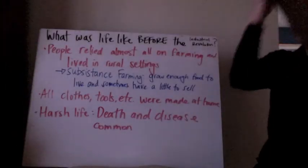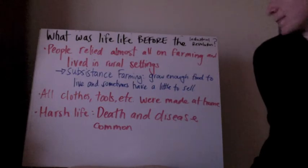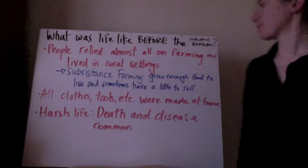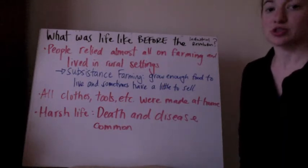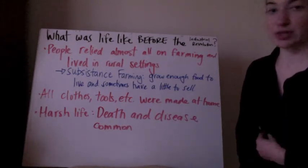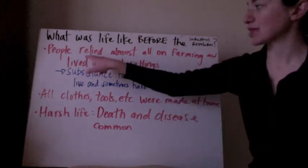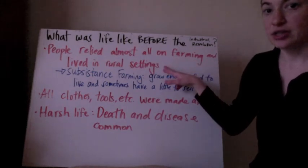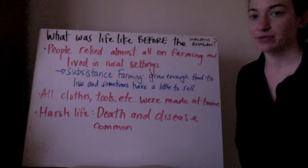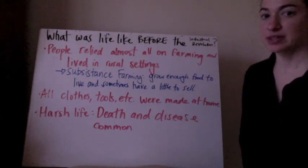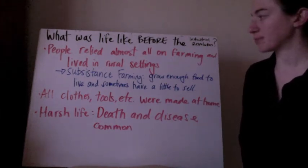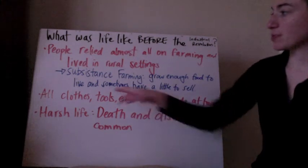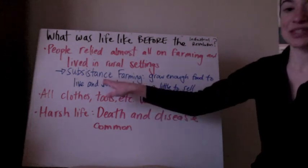The next board answers the question: what was life like before the Industrial Revolution? A lot of it was work being done at home. People relied almost entirely on farming and lived in rural settings. Durham is considered a city; a rural setting would be northern Durham or Bahama — more spread out, not as many people around. People did what's called subsistence farming.